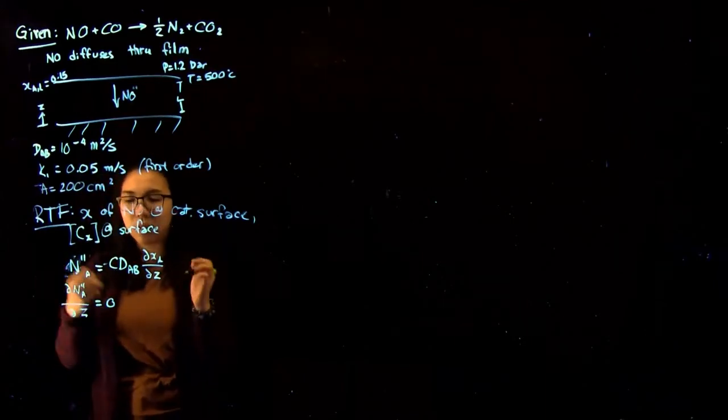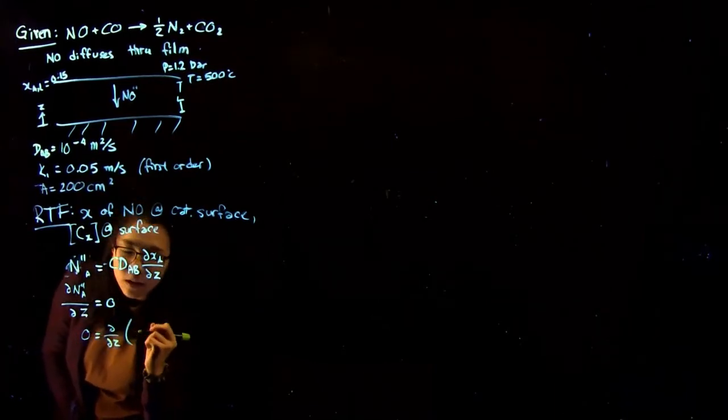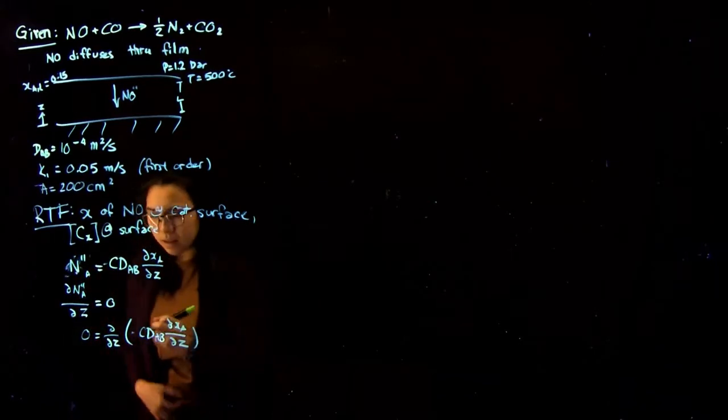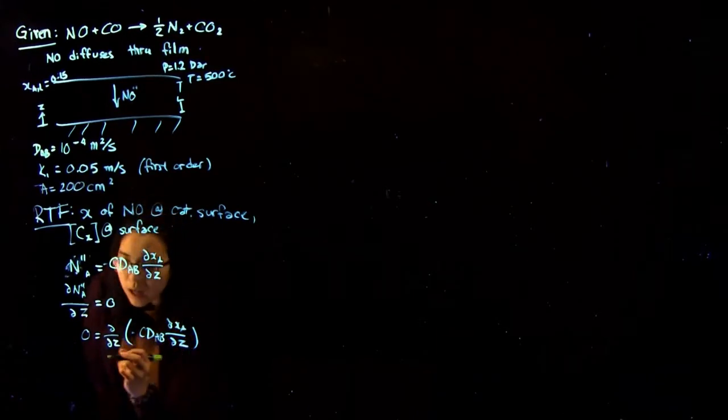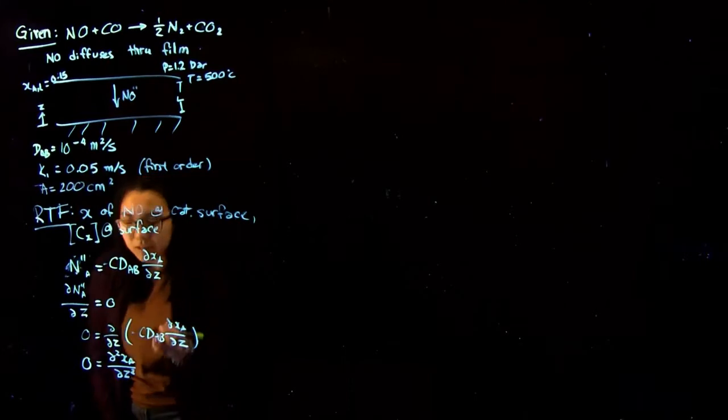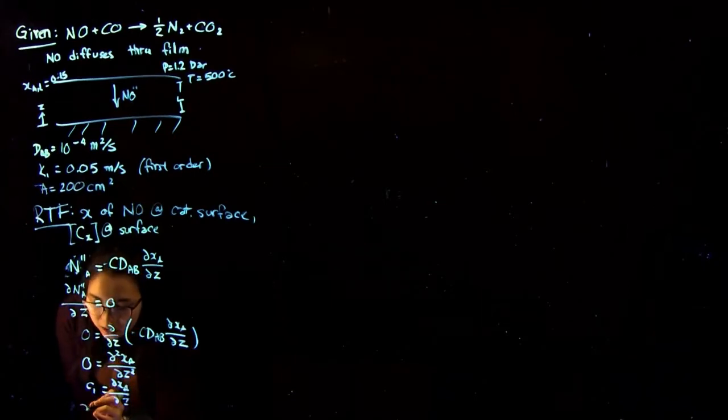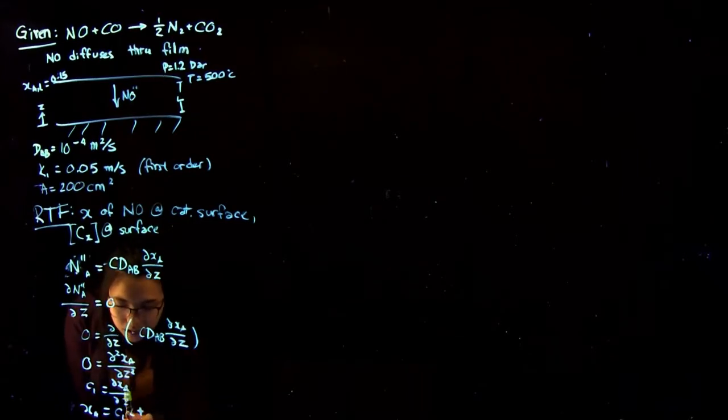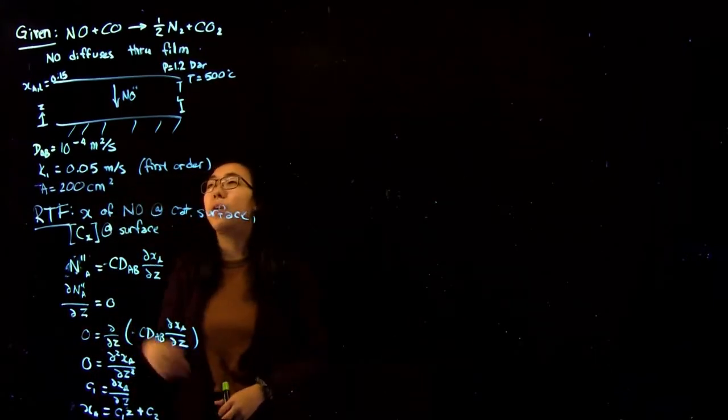So we can actually apply this derivative onto this equation to give us that zero is equal to d by dZ of minus CDAB times dXA by dZ. So this gives us that if we divide by the constants, which is C and D, we actually just get that zero is equal to d squared XA over dZ squared. Integrating once, C1 is equal to dXA by dZ. Integrating again, XA is equal to C1Z plus C2. So we actually have a linear concentration profile throughout this film.